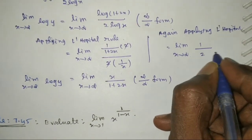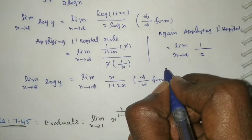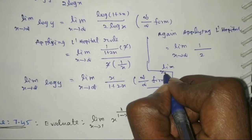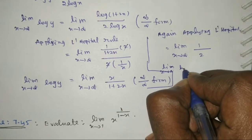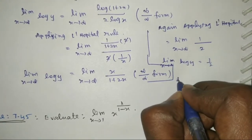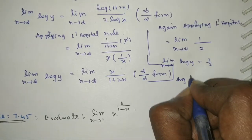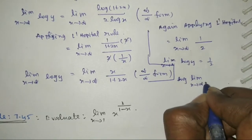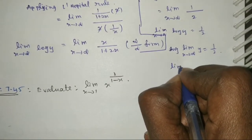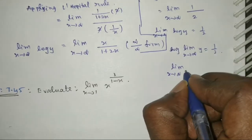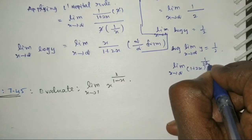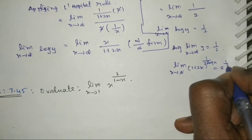Now applying the limit result on the left side: the limit as x tends to infinity of log y equals 1/2. Applying the composition rule, the limit as x tends to infinity of y equals e^(1/2). Therefore, the limit as x tends to infinity of (1 + 2x)^(1/(2 log x)) equals e^(1/2). This is the question and this is the answer.